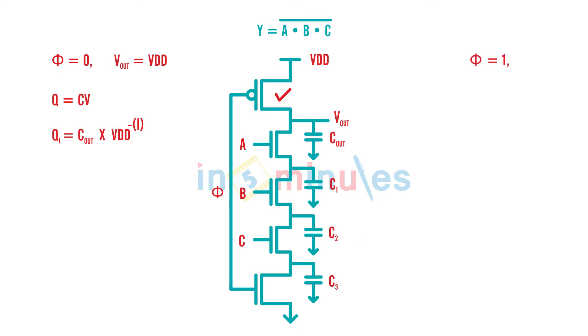Now what we are going to do is we'll make our phi equal to 1, that means my PMOS is off and now I enter the evaluate phase, means whatever changes happen at the input will be reflected. I make my A=1, B=1, and my C=0.